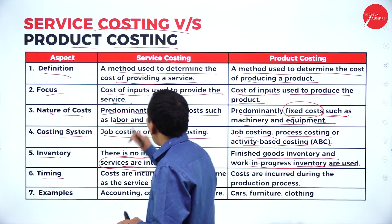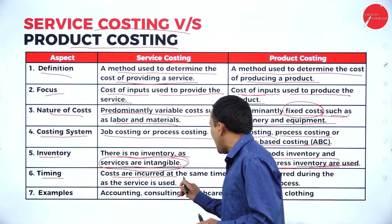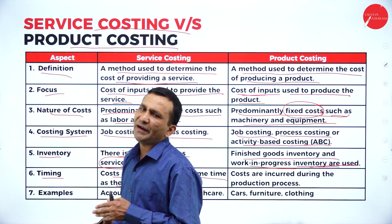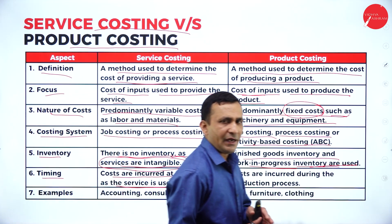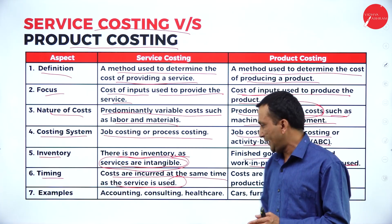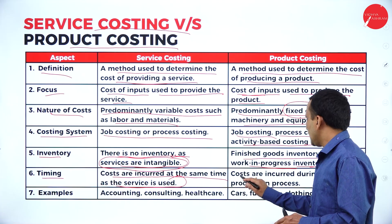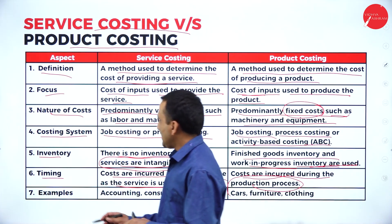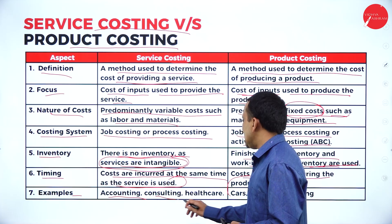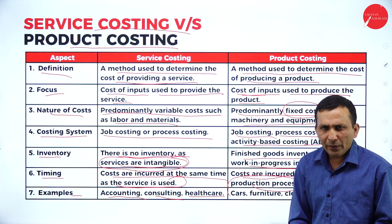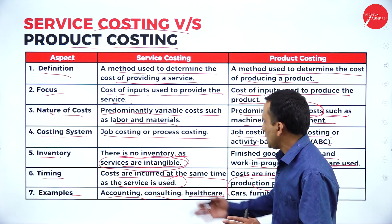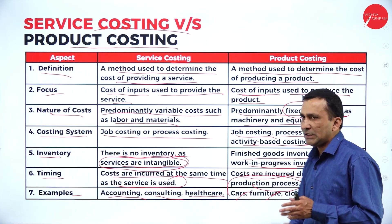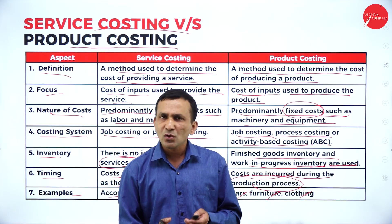On the timing of costs: under service costing, costs are incurred at the same time the service is used — each time you offer a service, the cost varies. In the case of physical products, the cost is incurred during the production process only. Examples of service: accounting, consulting, healthcare, telecommunication. Examples of physical products: cars, furniture, clothing, FMCG and FMCD products.